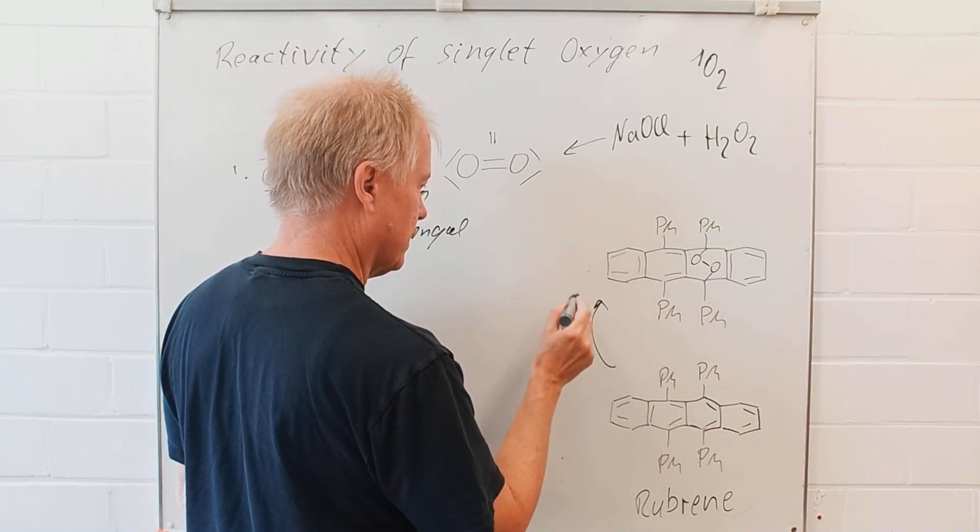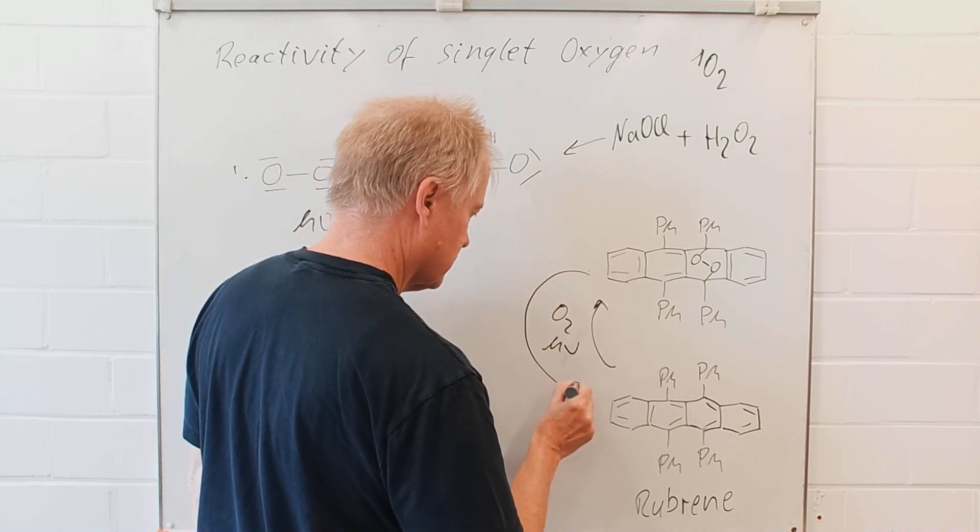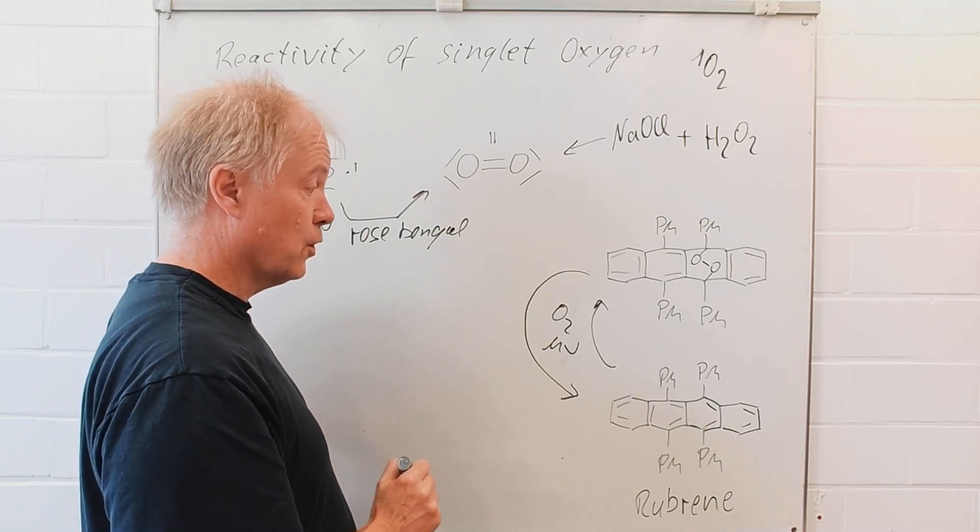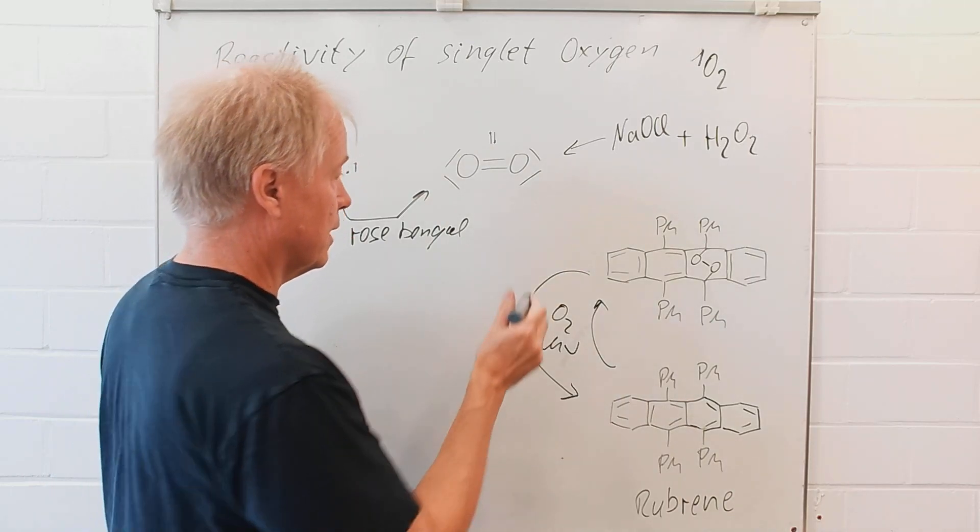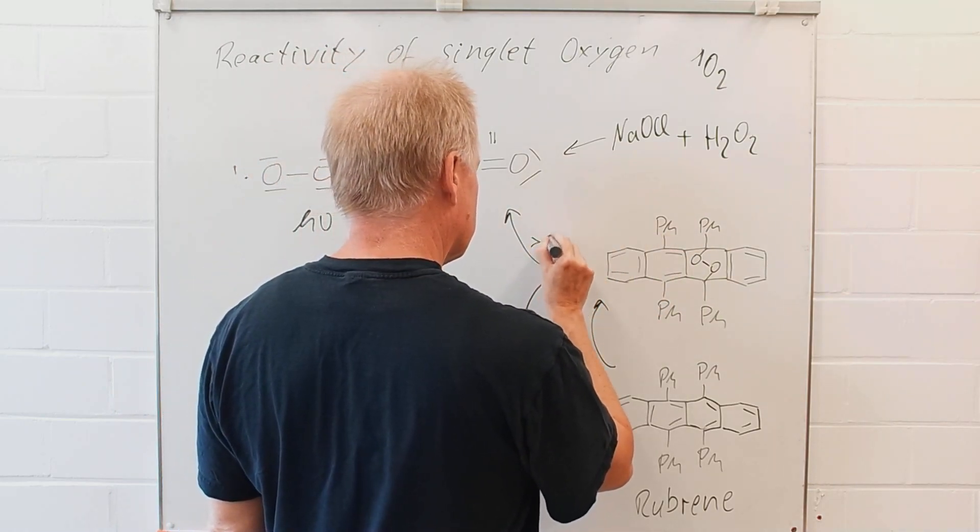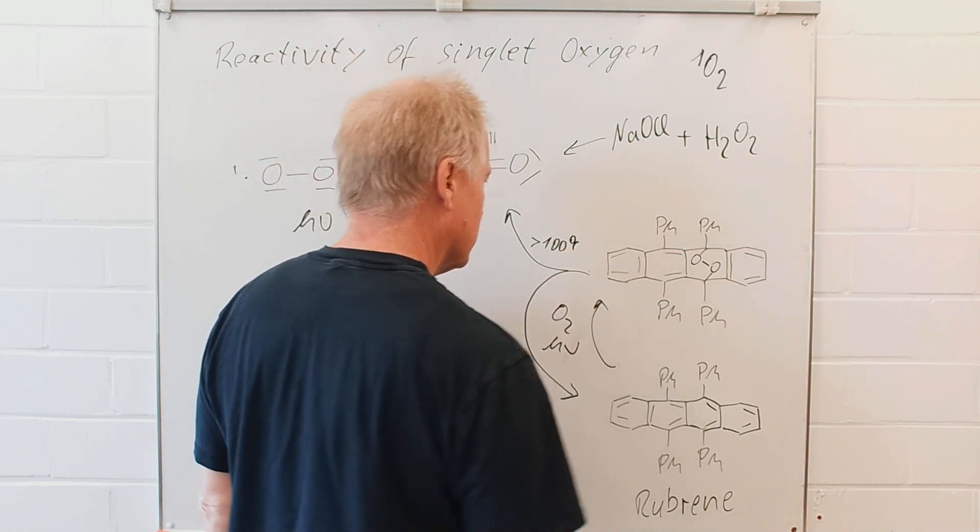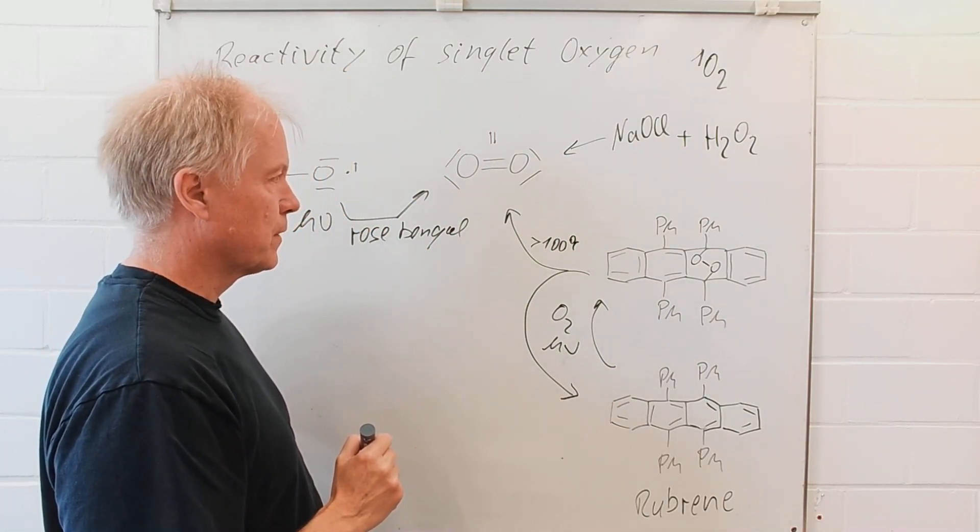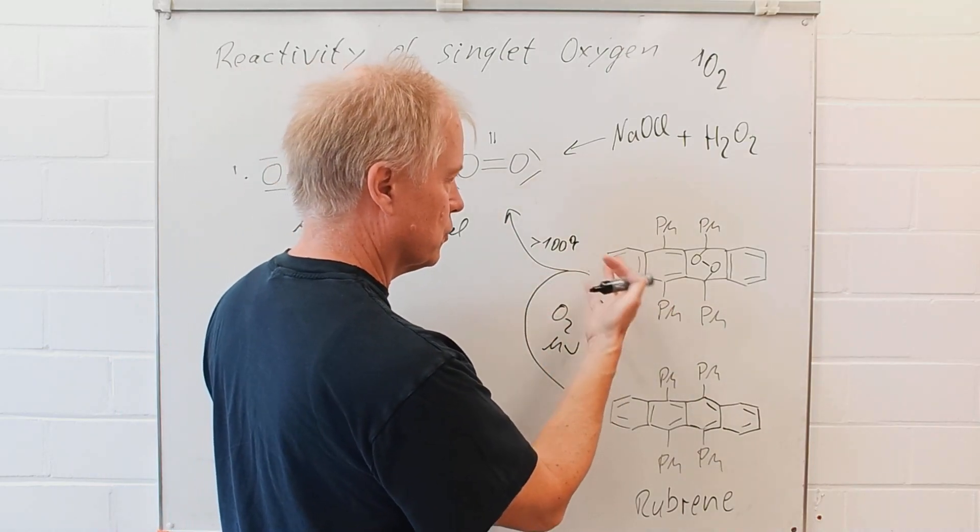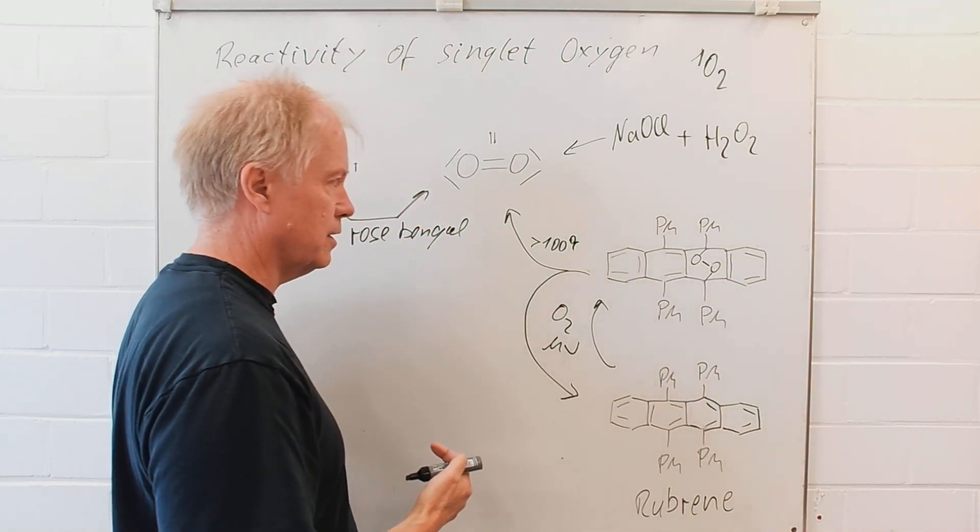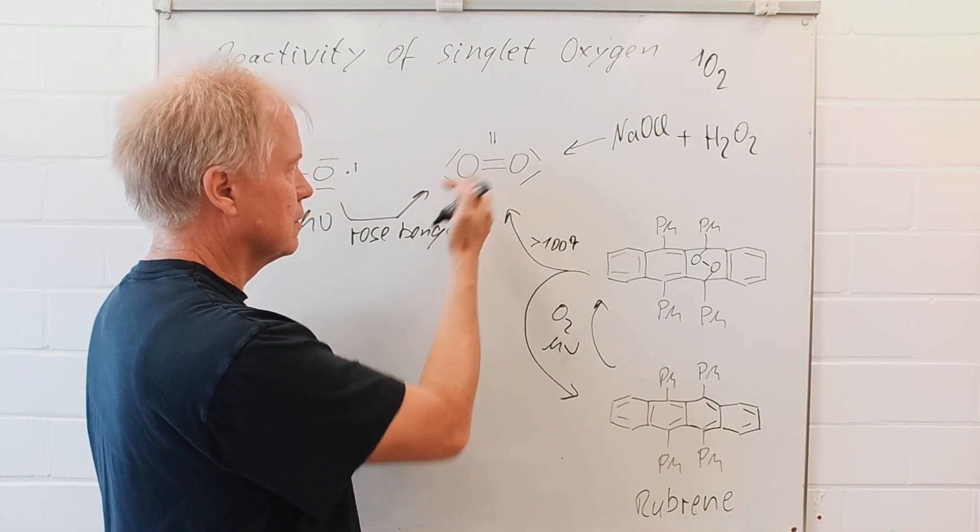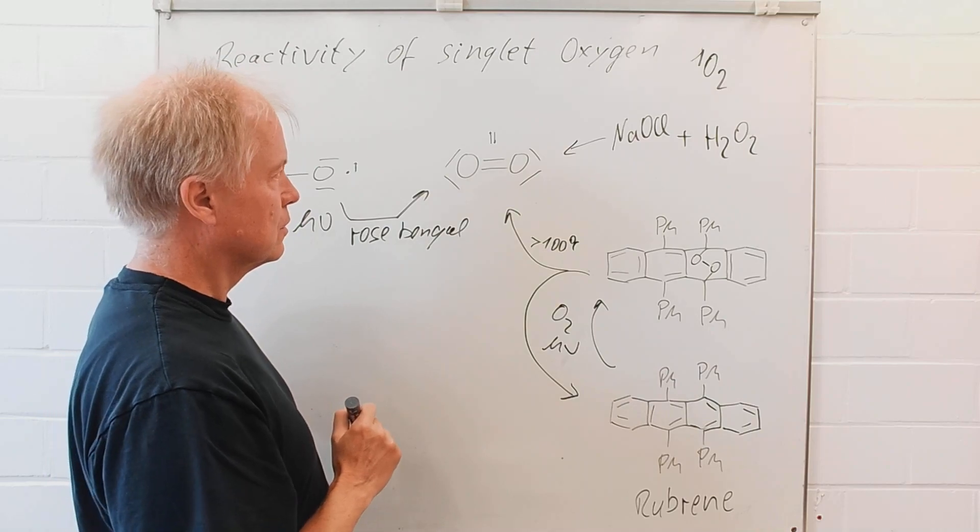So, now this reaction can go in the opposite direction just by heating this up above 100 degrees in solution. And therefore, by thermolysis of the rubrene endoperoxide, we can generate thermally the singlet oxygen.